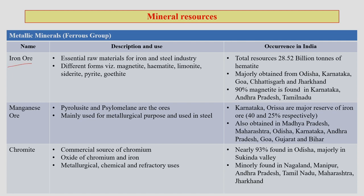Iron ore is an essential raw material for the steel industry. Types include magnetite, hematite, limonite, siderite, pyrite, and goethite. Almost 28-29 billion tons of hematite are available, majorly from Odisha, Karnataka, Goa, Chhattisgarh, and Jharkhand. Almost 90 percent of magnetite is found in Karnataka, Andhra Pradesh, and Tamil Nadu — meaning the southern part of the country dominates in magnetite deposits.